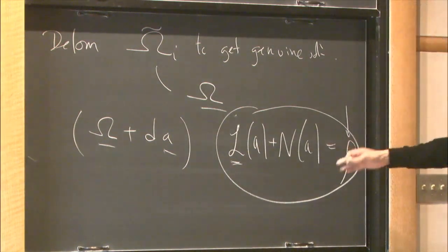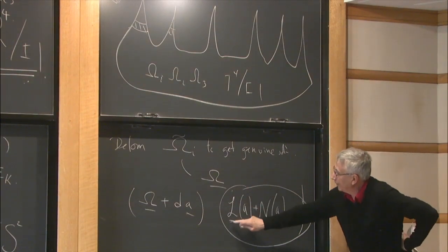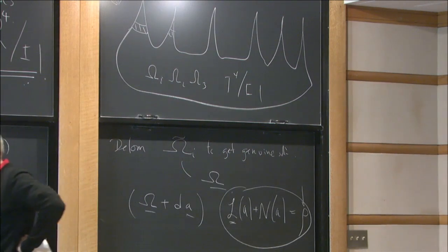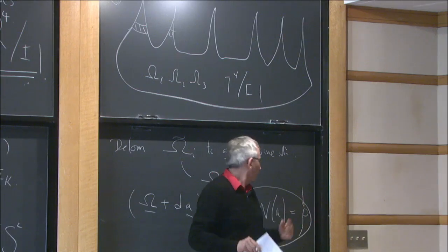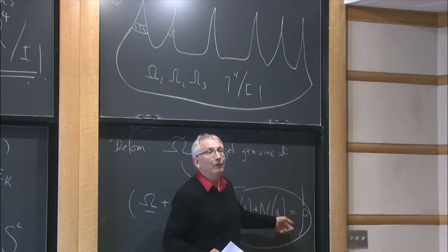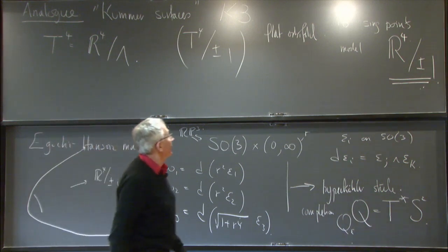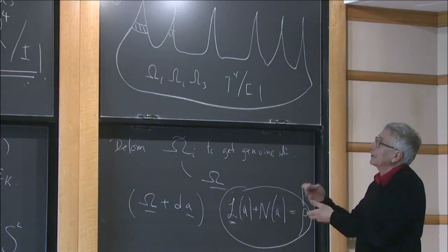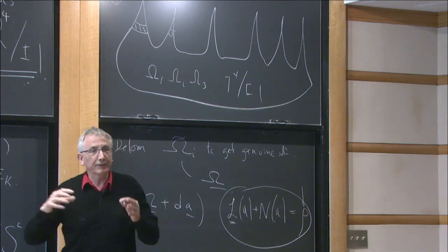Everything depends on the parameter ε. The basic problems are: we want to invert this linear operator with good estimates on the norm of the inverse, compare those to the size of the gluing error, and ensure our norms are compatible with the non-linearity. This gives another way of constructing hyperkähler metrics on K3 surfaces — even without knowing anything about complex geometry or Calabi-Yau, Yau's theorem — by building up from simpler building blocks.